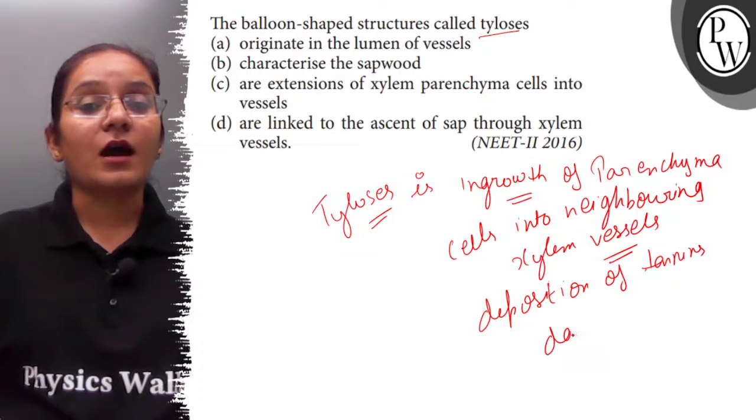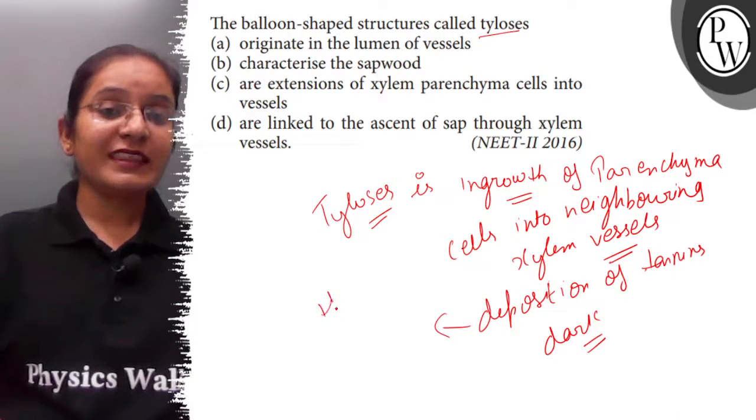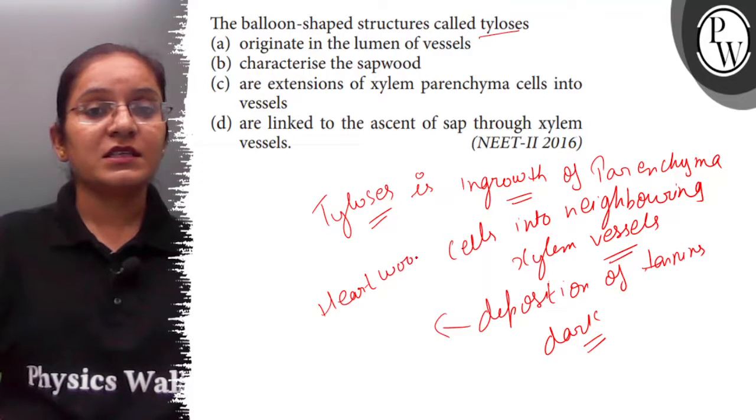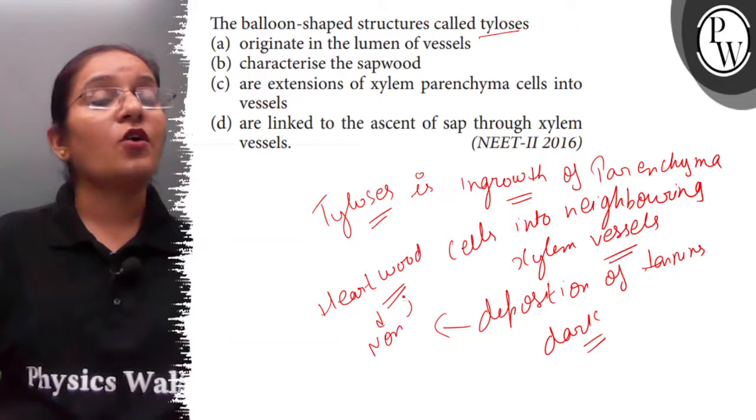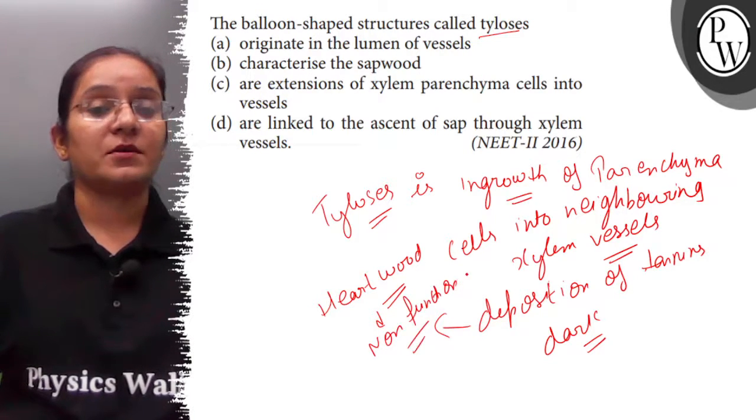They become dark, and such type of wood that develops from these depositions is called heartwood. It is a characteristic of heartwood, and the wood becomes non-functional, meaning water conduction will not occur, no ascent of sap will occur.